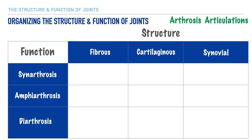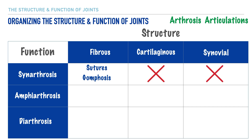Starting in our first row, the examples we'll list are sutures and gomphosis. The fibrous joints we have in the body are immovable, and the examples that fit this are sutures and gomphosis. We do not have any cartilaginous or synovial joints in the body that are immovable.